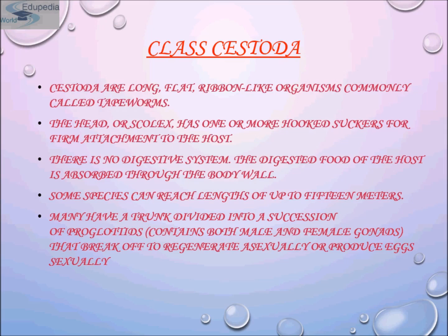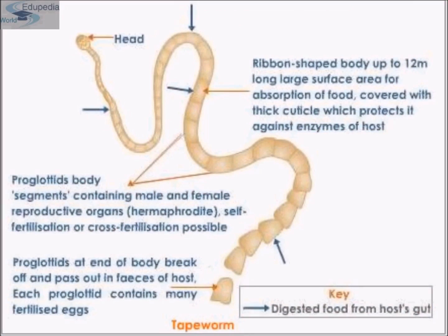The body of an adult tapeworm is virtually a reproductive factory behind a small securing structure called the scolex, which bears a circle of hooks or other attachment organs. Proglottids constantly bud off from the main body and gradually enlarge as they mature, becoming filled with male and female reproductive organs. Cross-fertilization takes place with adjacent segments or neighboring proglottids; in some cases self-fertilization also occurs.